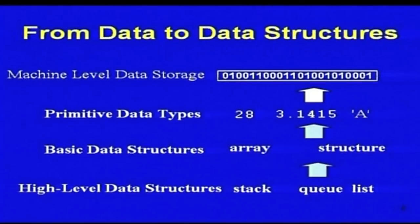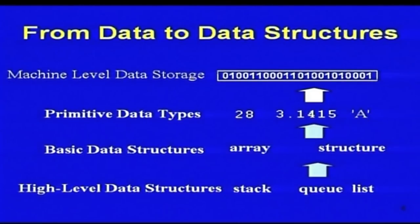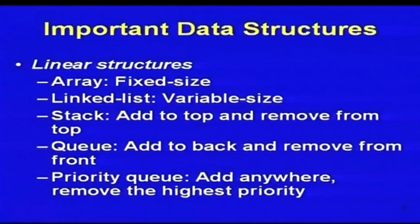Stack, queue, and list are data structures defined so that you can do particular operations on them. Data stored in the machine is in the form of binary bits — that is machine-level data storage. Then we have primitive data types like integers, floating point like 3.145, and characters like A. Then basic data structures like arrays and structures, plus high-level data structures like stack, queue, and list. When we talk about data structures, there are two types: linear data structures and non-linear data structures.